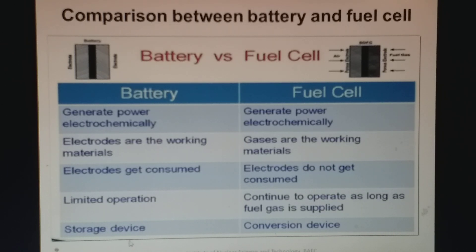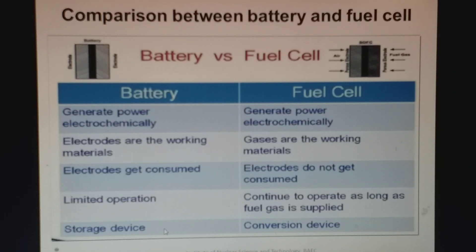A battery is a storage device — like a mobile or laptop battery, you have to charge it, and after a time you have to replace it. But a fuel cell is a conversion device: it only converts chemical energy to electric energy. It is not a storage device, meaning the fuel cell never stores any charge and you do not need to charge it.